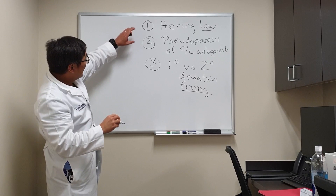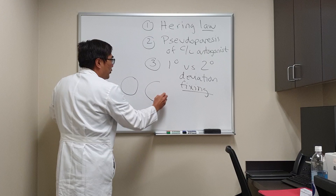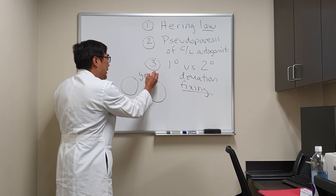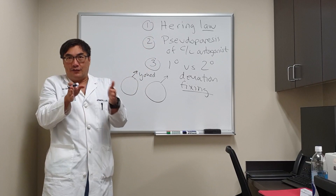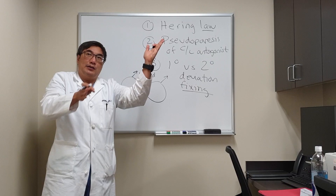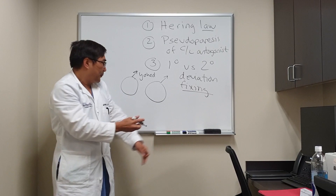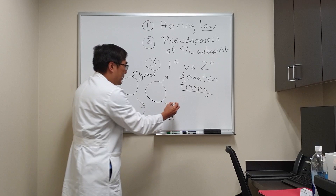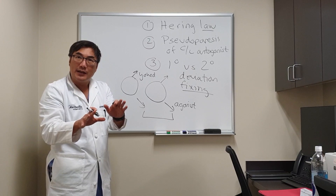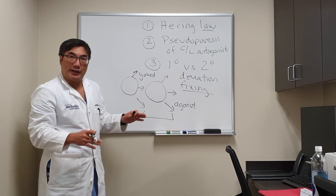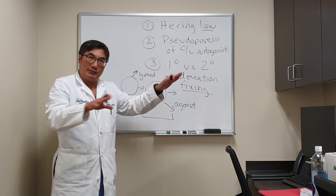Hering's Law means that we have equal innervation to both eyes because the muscles are yoked together. If we want to look up and to the left, the two muscles that are yoked together are the left superior rectus and the right inferior oblique. If we want to look down and to the left, it would be the right superior oblique yoked to the left inferior rectus muscle. The left lateral rectus would be yoked to the right medial rectus in the horizontal case.